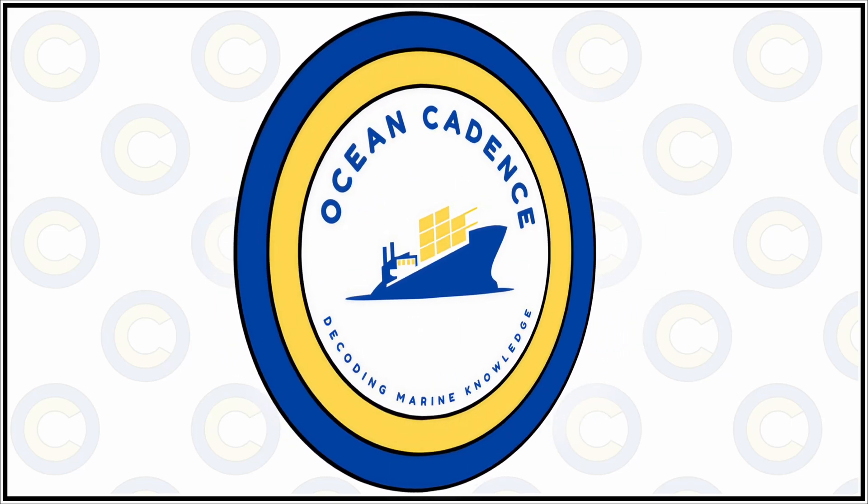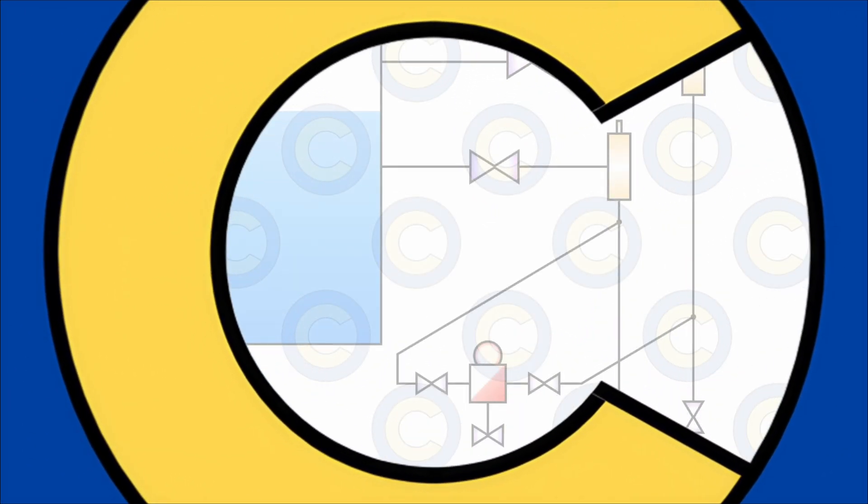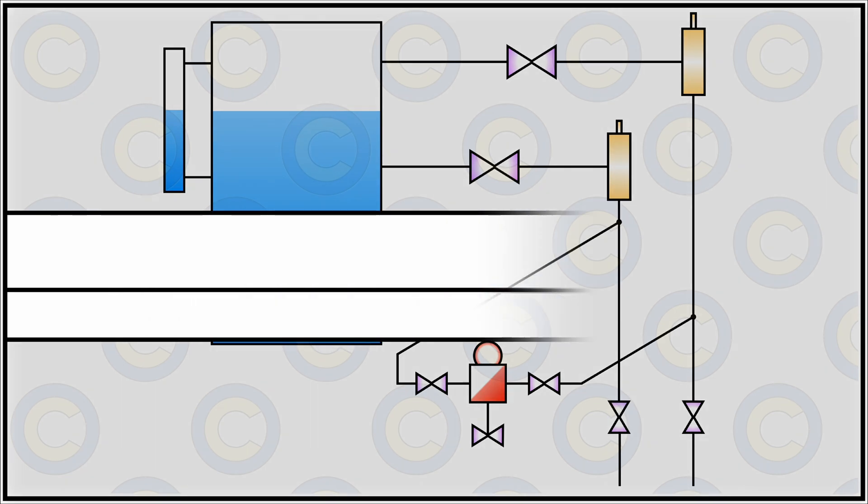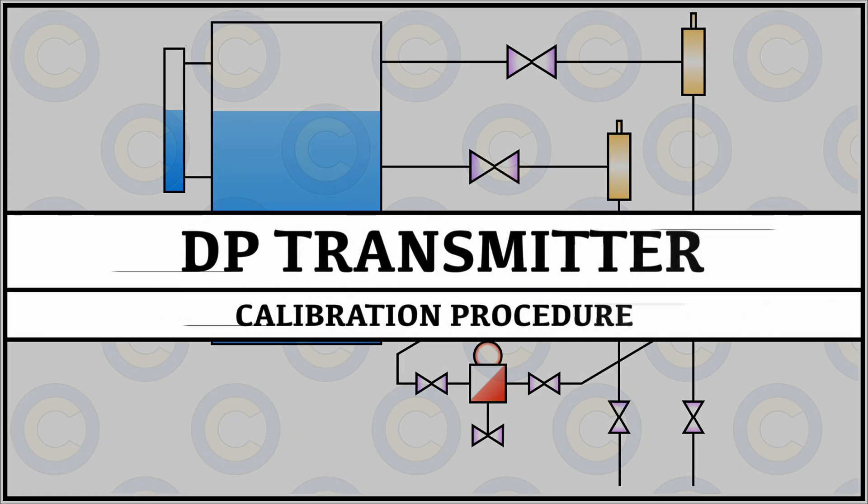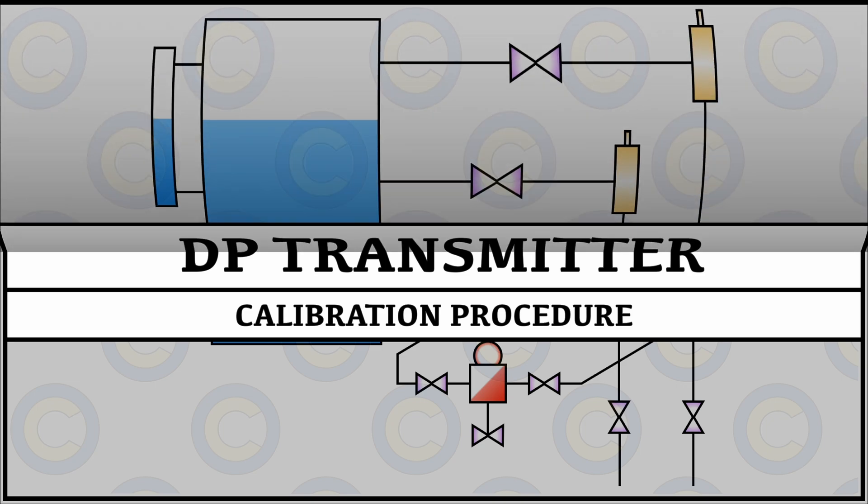Hello everyone and welcome to Ocean Cadence. In our video today we will be covering the topic of the calibration of a DP transmitter or a DP cell on board a ship for a boiler and also understanding how we can fit a new DP transmitter in case the existing one is malfunctioning. So let us start.